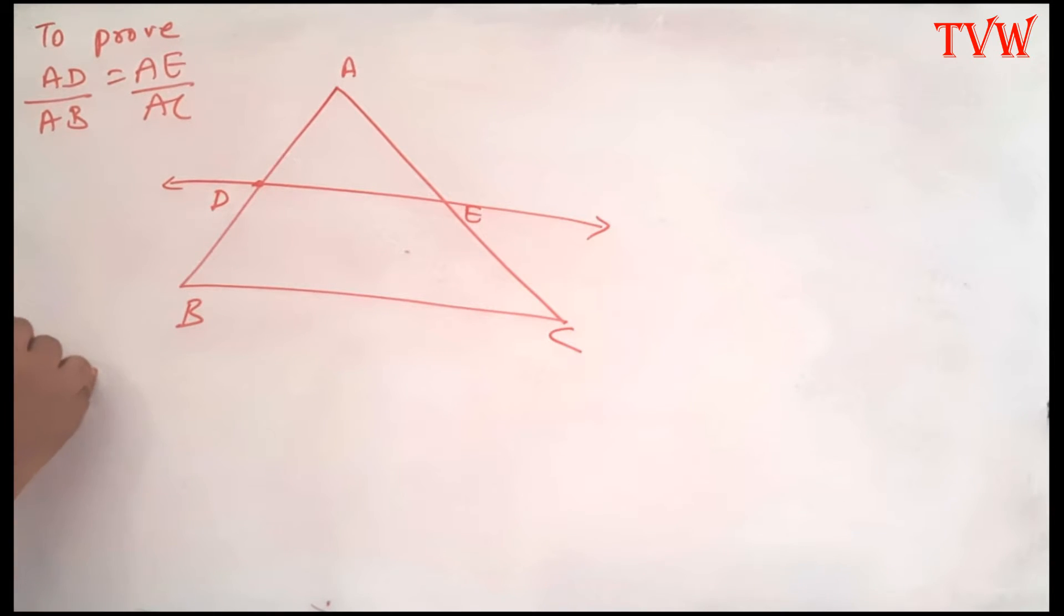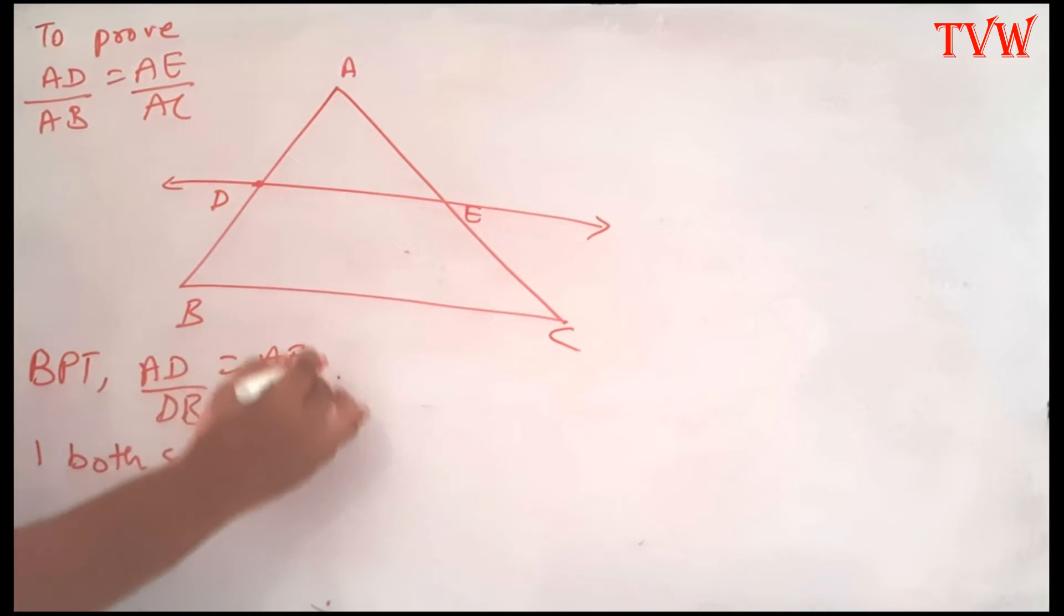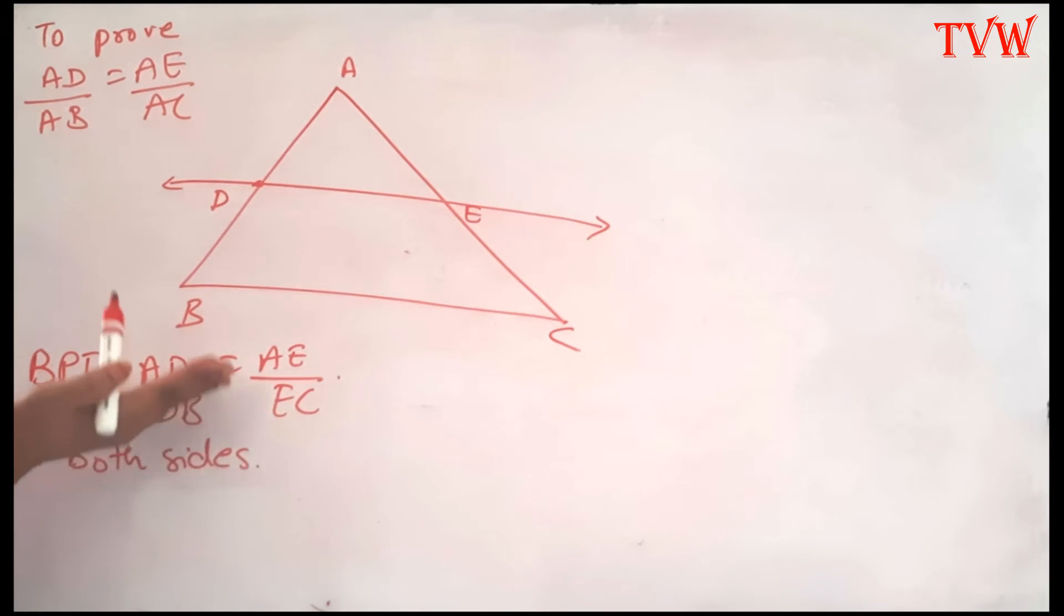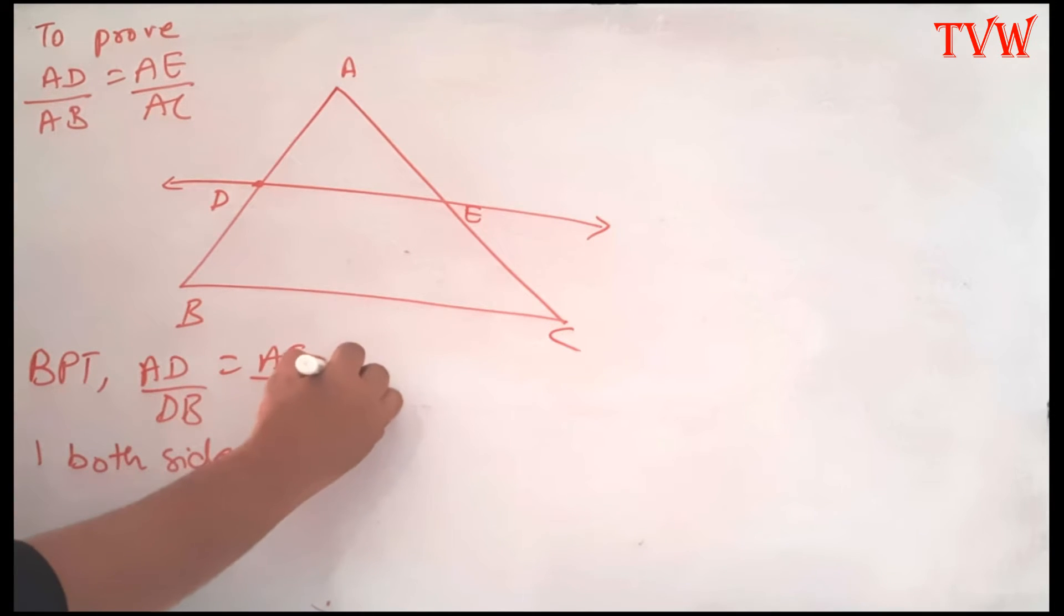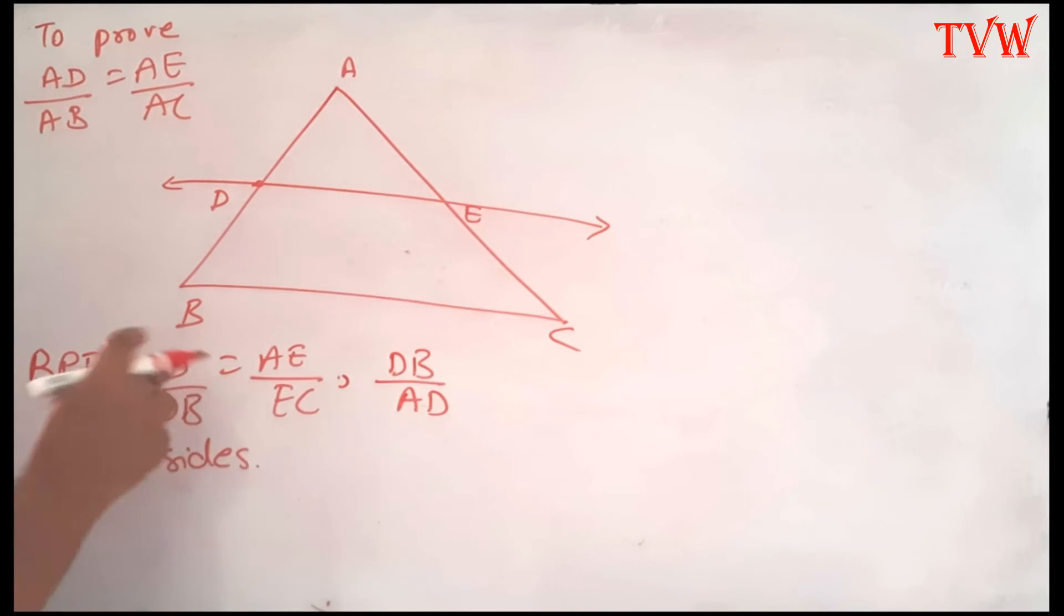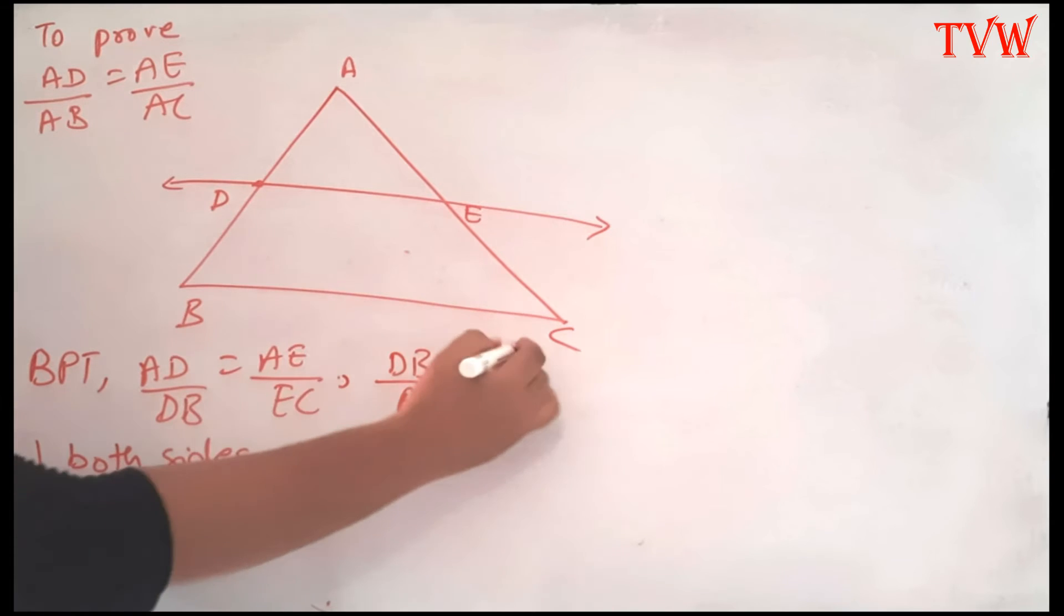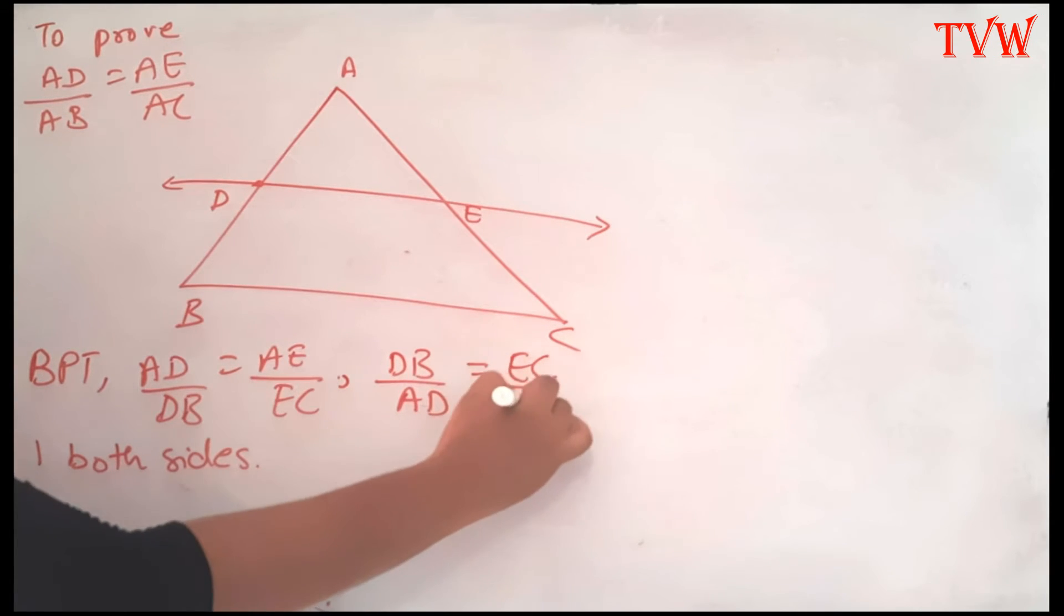According to BPT, what do we know? AD divided by DB is equal to AE divided by EC. But before adding one on both sides, I know that if I take the numerator and denominator on both sides, the reciprocal is going to be the same. So I can write DB divided by AD equals the reciprocal of this, EC divided by AE.